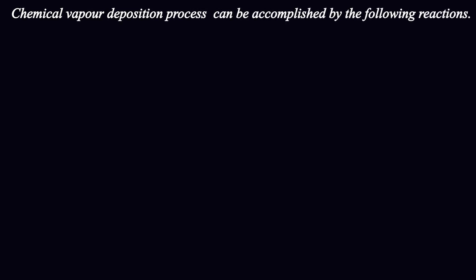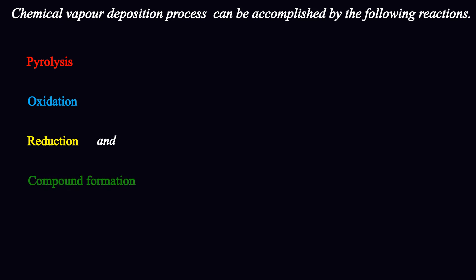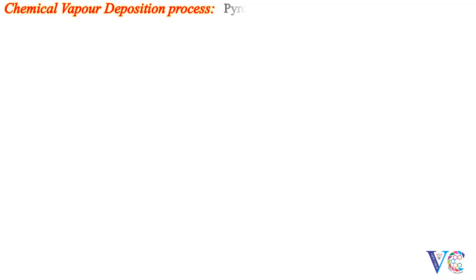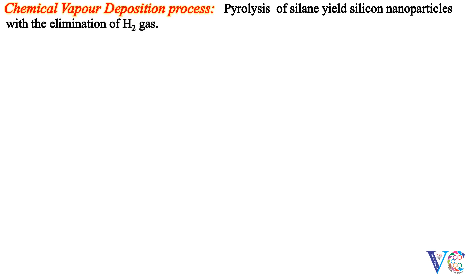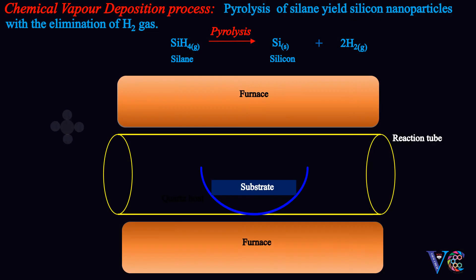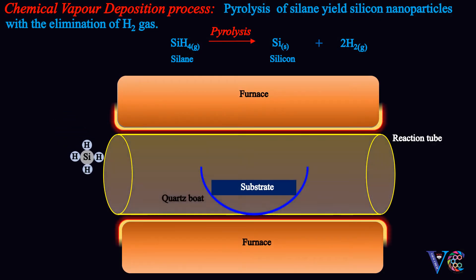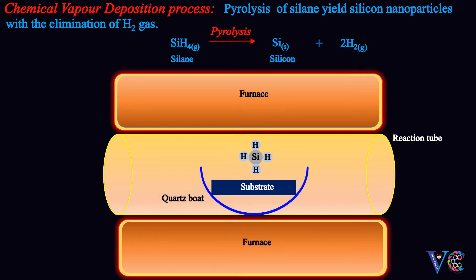Chemical vapor deposition can be accomplished by the following reactions: pyrolysis, oxidation, reduction, and compound formation. Pyrolysis of silane yields silicon nanoparticles with the elimination of hydrogen gas. Oxidation of silane gives silicon dioxide nanoparticles with the liberation of hydrogen gas.